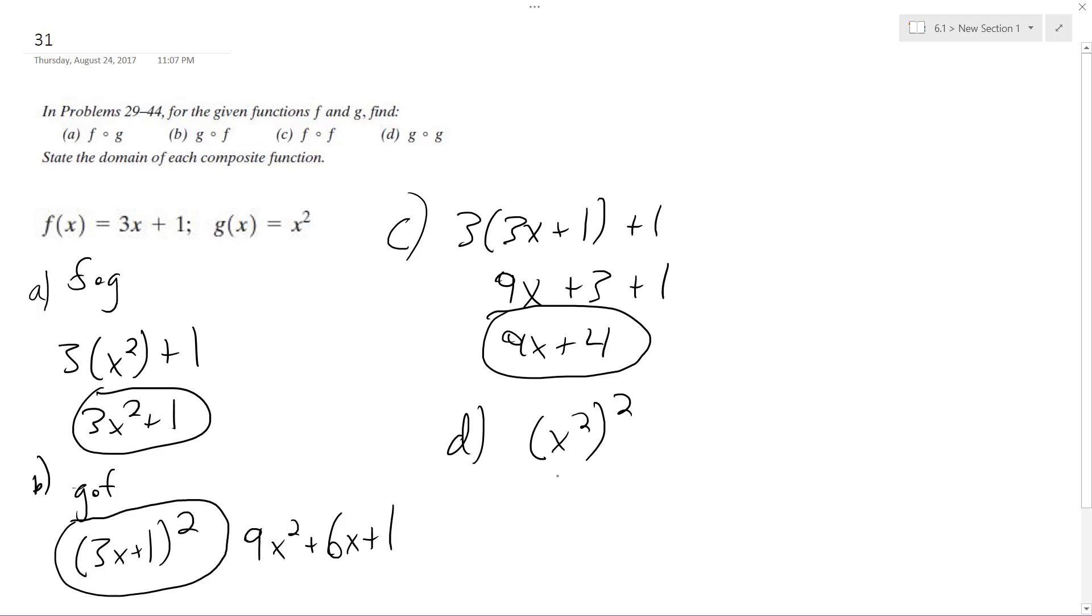So that just becomes, the exponent of an exponent, you multiply the exponents, so it just becomes x to the fourth. And that's it.